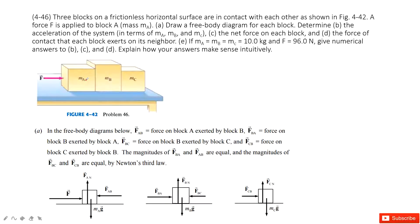Why do we say there is a force B to A? Because when there is a person pushing object A, there must be the force A to B to transfer the force. So we have the force A to B. From Newton's third law, there must be the force B to A in the opposite direction with the same magnitude.